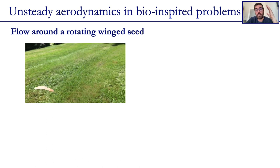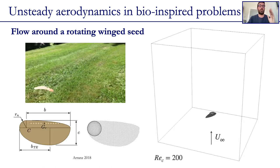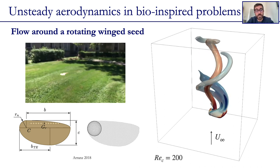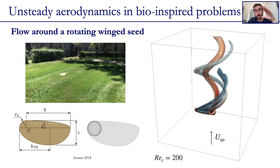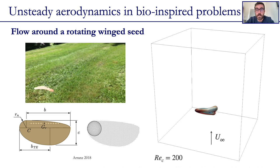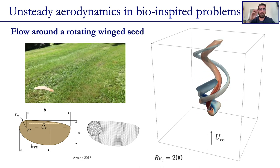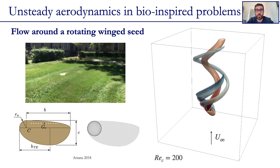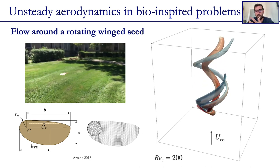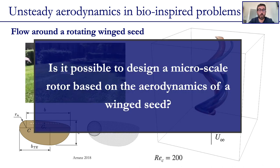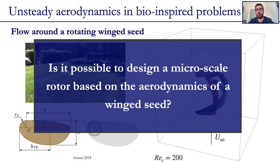Now finally, going for unsteady aerodynamics in bio-inspired problems, first of all we have focused on the flow around a rotating winged seed, for which we have modeled the shape in a simplified way using an oblate spheroid for the nut and four ellipses that are tangent for the wing. We also show here some nice animation showing the shedding of the isosurfaces as the winged seed rotates for a simulation that has been done in the GPU code already at Reynolds 200. And in spite of the fact that I would like to analyze these results more in detail, since we don't have time, I am just going to comment that our research is now going towards investigating if it is possible to design a micro-scale rotor based on the aerodynamics of the winged seed.